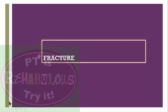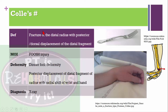Fractures — Colles' fracture: fracture of the distal end of the radius with posterior or dorsal displacement of the distal fragment, caused by fall on an outstretched hand. The deformity is like a dinner fork — posterior displacement of the distal fragment of the radius with radial shift of the wrist and hand. Diagnosed by X-ray.